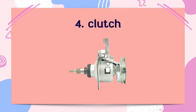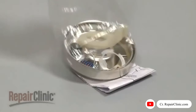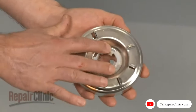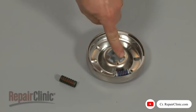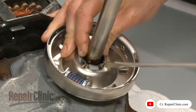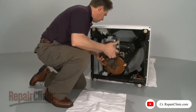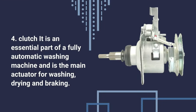Fourth, Clutch. To install the new clutch assembly. It is an essential part of a fully automatic washing machine. And it is an extractor for washing, drying, and braking.